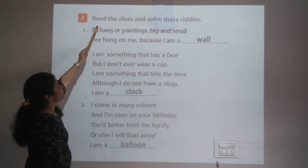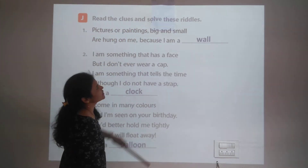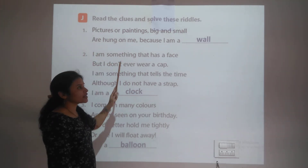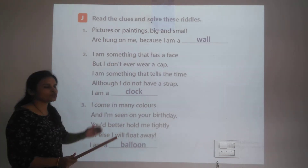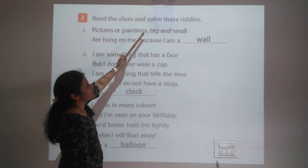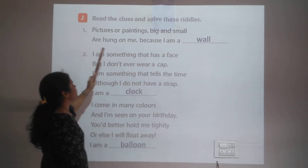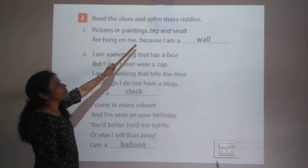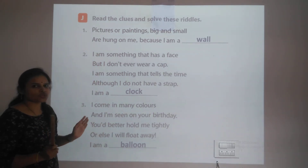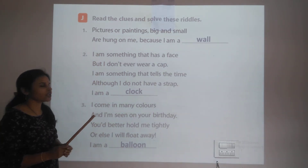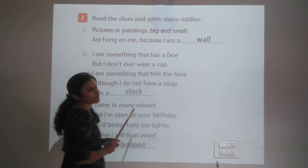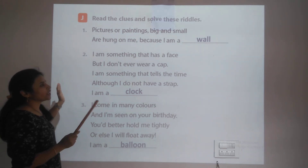Question J: Read the clues and solve the riddles. First riddle: Pictures and paintings, big and small, are hung on me. I am a wall. The answer is wall.